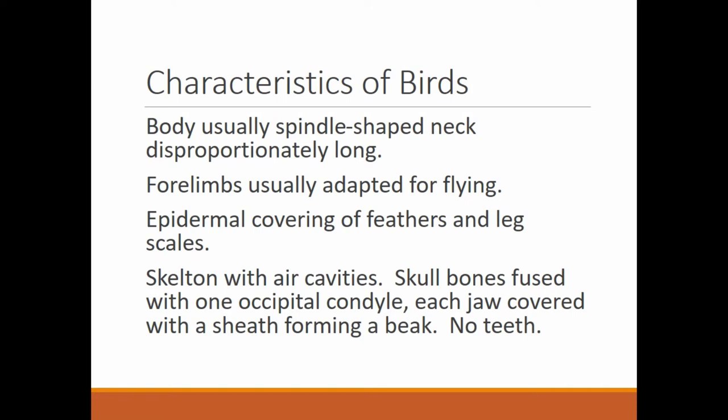Characteristics of birds: body is usually spindle-shaped, with a disproportionately long neck. Think about a swan or an ostrich — those are examples of long necks. Forelimbs are usually adapted for flying, also known as wings. The epidermal covering consists of feathers and leg scales. All birds have feathers; not all birds can fly, but their forelimbs are still wings and they all have feathers and scaly skin on their legs.